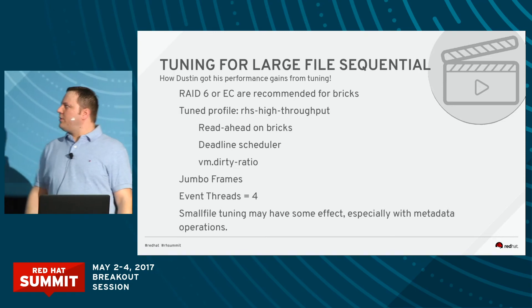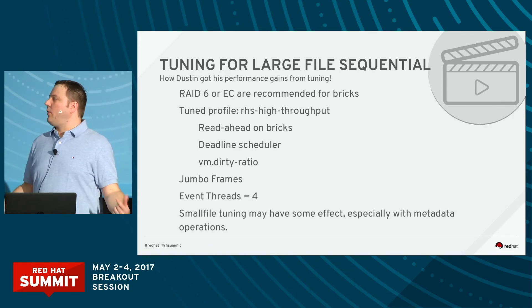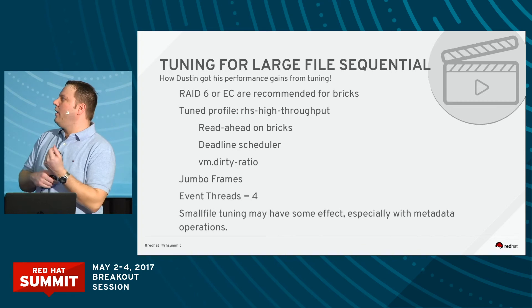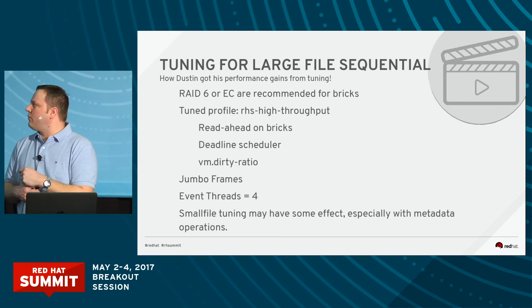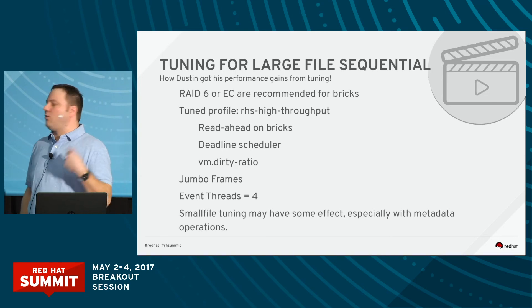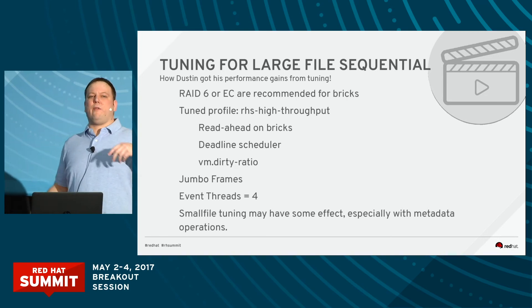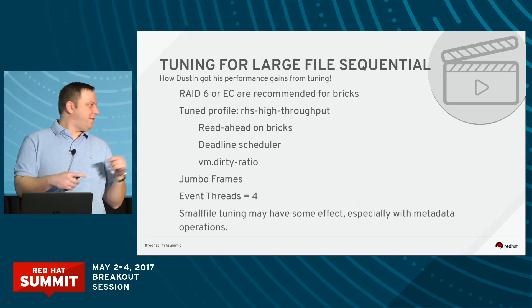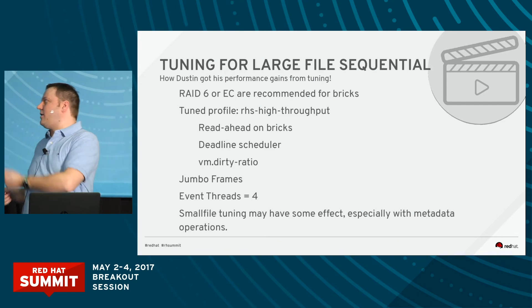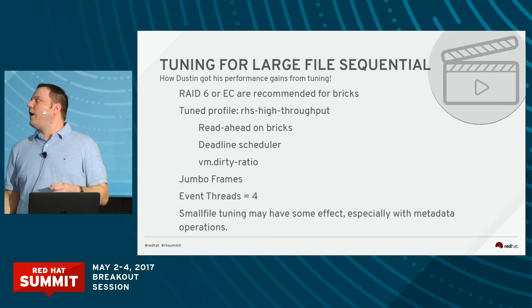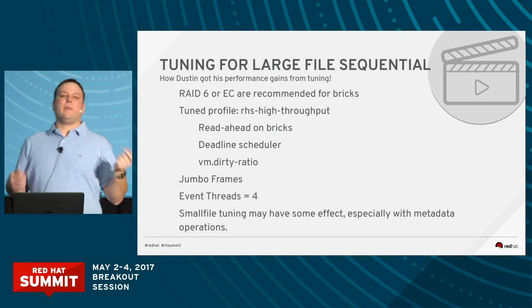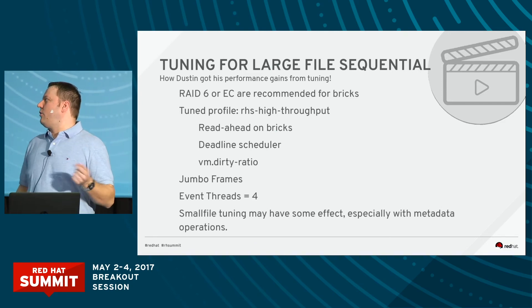Gluster was actually designed for large file sequential workloads, so Gluster's always been pretty good at that. For our bricks, we can use EC or RAID 6. EC, if we're massively parallel and we have lots of threads slash workers, lots of files, tends to perform really well. Where if we have less workers, threads, files, or even single-threaded workloads, RAID 6 tends to do a little bit better.